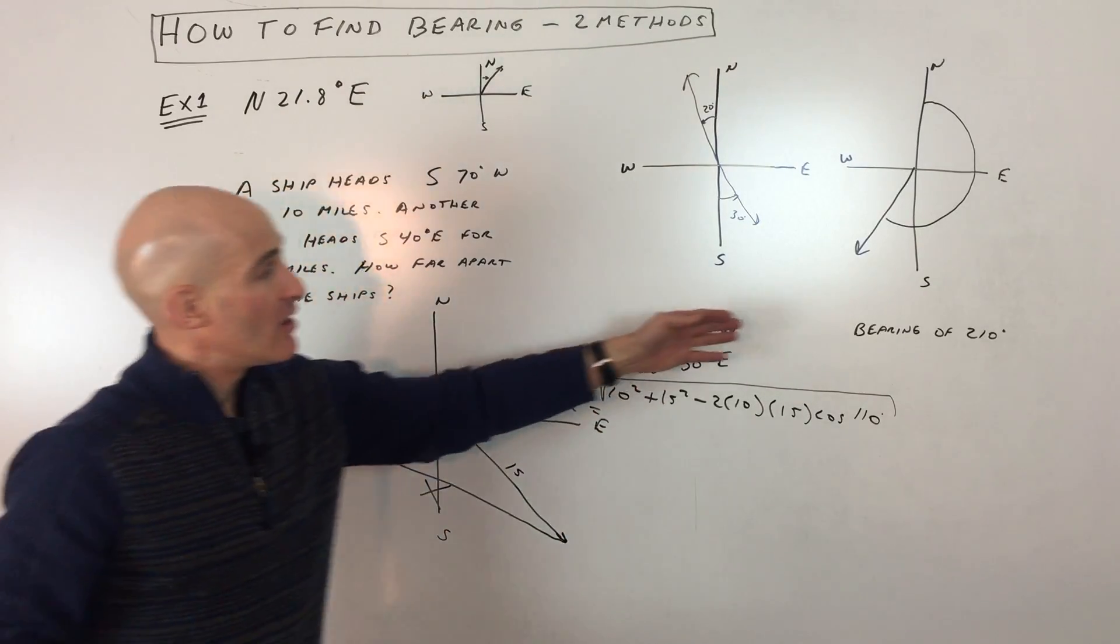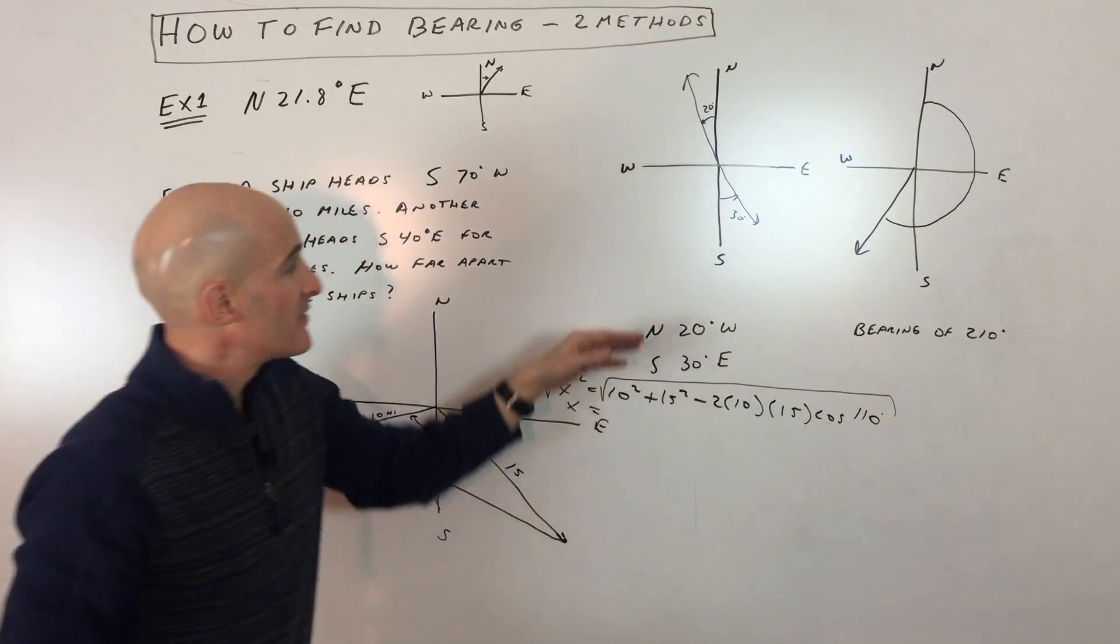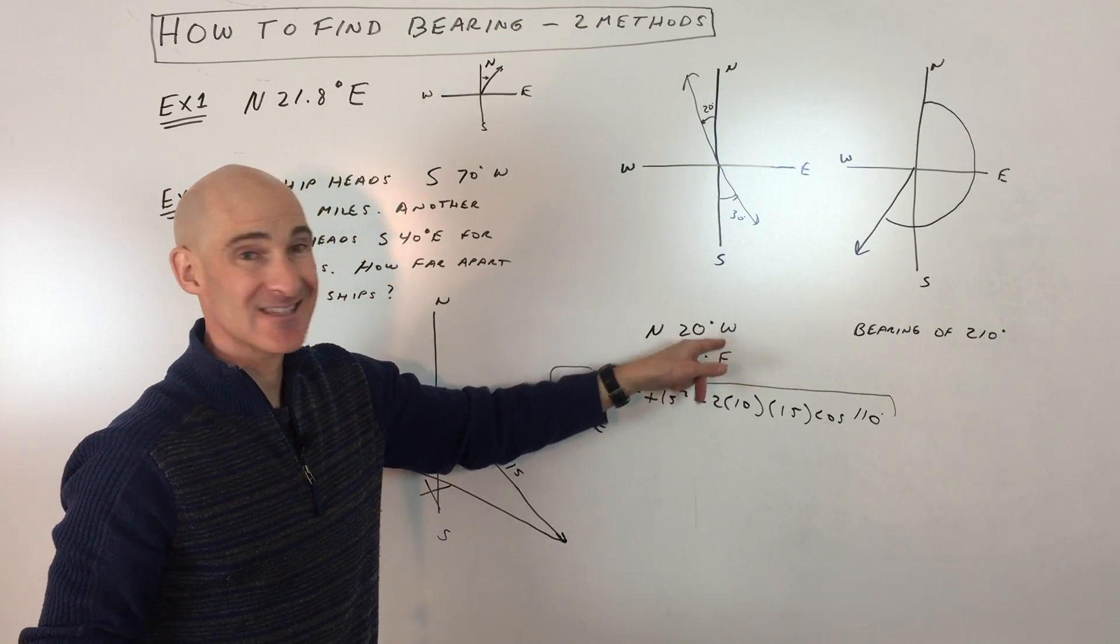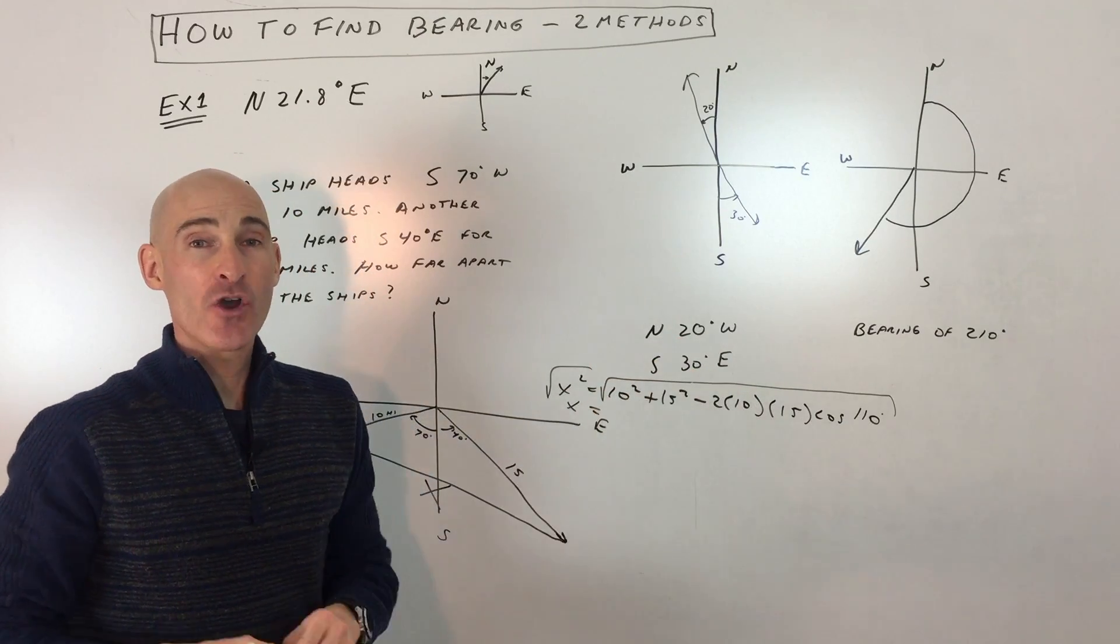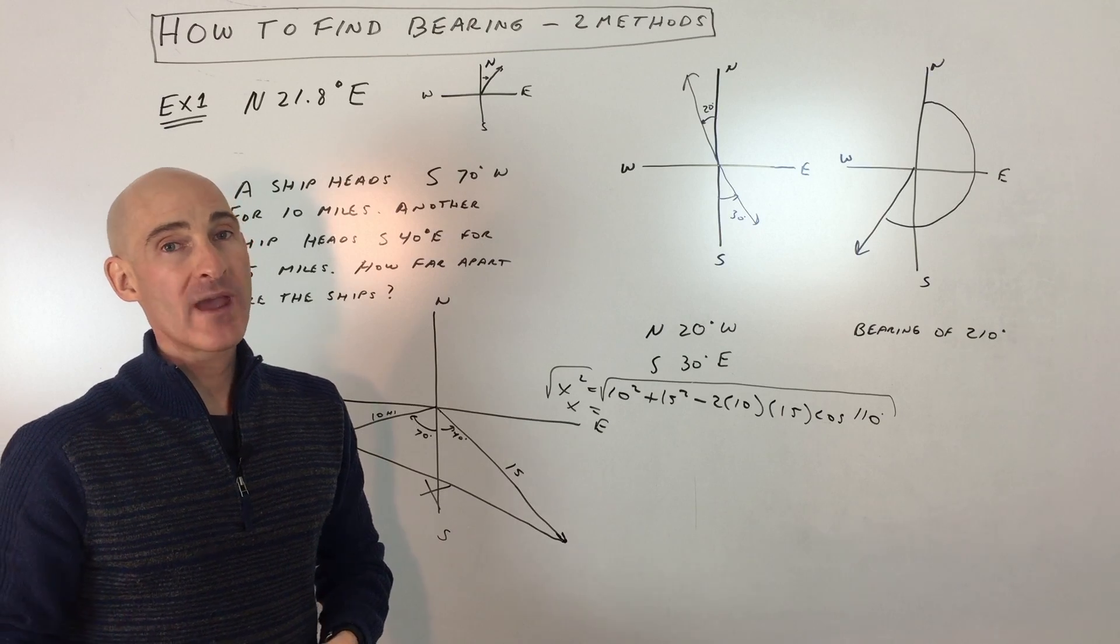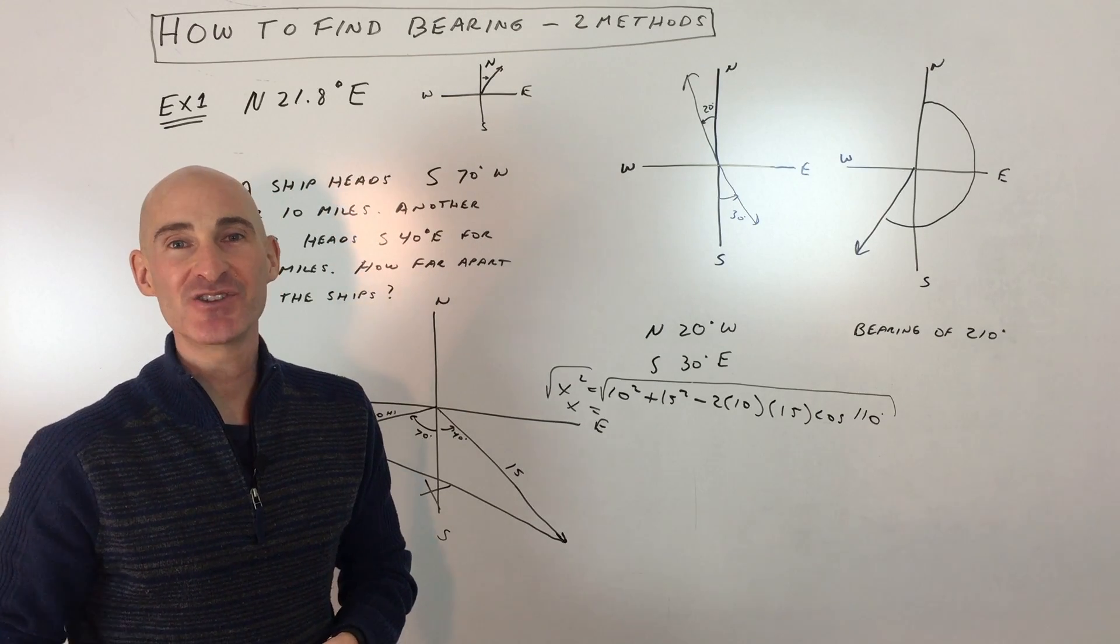So again, two different ways to measure bearing, either from the north clockwise or the second way, start facing the first letter, either north or south, and then you're going to head towards that second letter, east or west, that many degrees. So I hope this helped you understand bearing a little bit better. Subscribe to the channel, check out more math tutoring videos on my YouTube channel, Mario's Math Tutoring, and I look forward to helping you in the future videos. I'll talk to you soon.